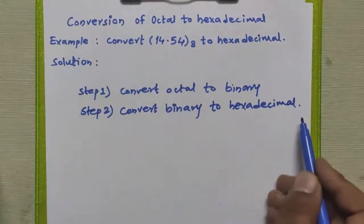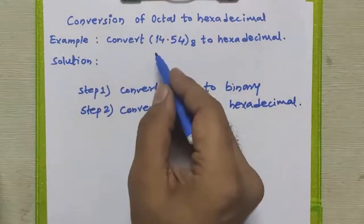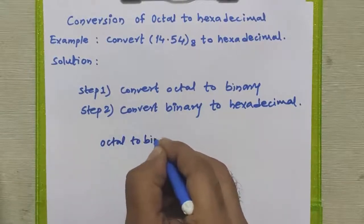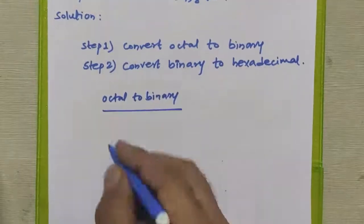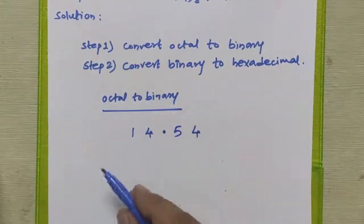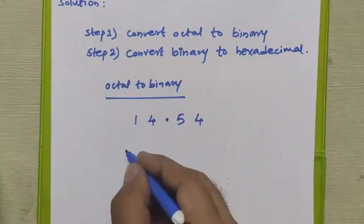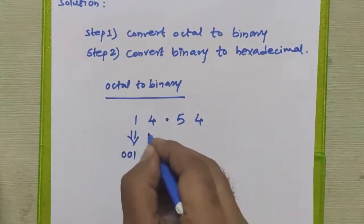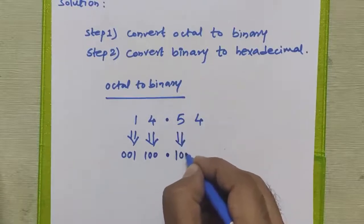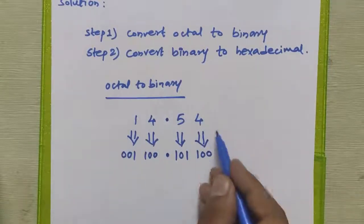We already studied how to convert any octal number to binary in previous videos, as well as how to convert any binary number to hexadecimal. Now we will first convert the given octal number 14.54 to binary. For each octal digit we write the three-bit binary equivalent: 1→001, 4→100, point, 5→101, 4→100. So the binary result is 001100.101100.